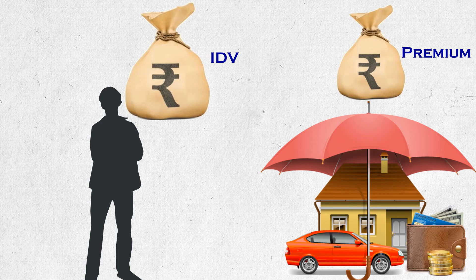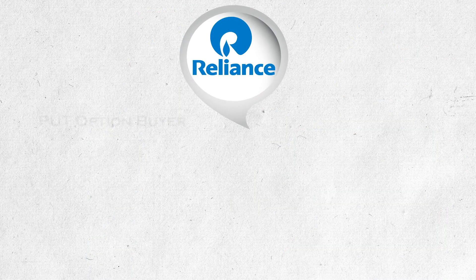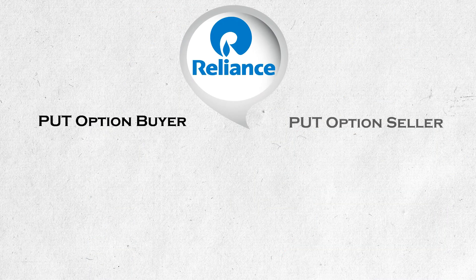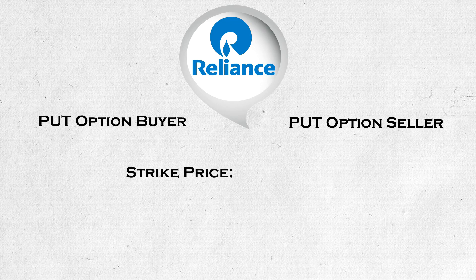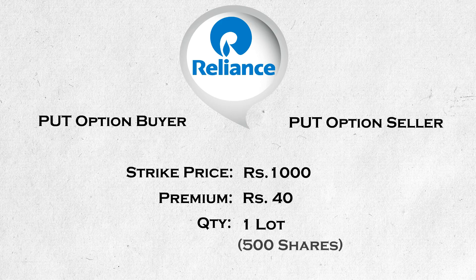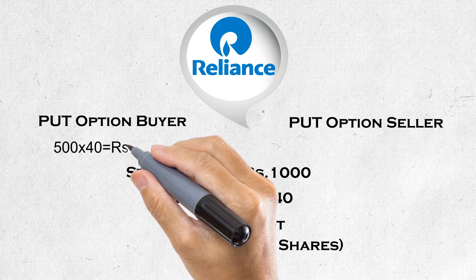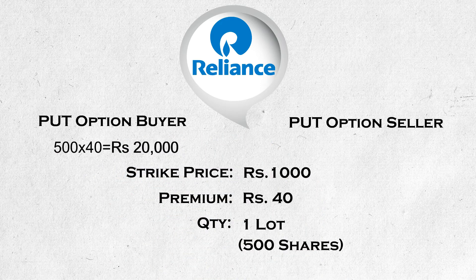Let us check put options in the actual market. Let's suppose that in Raylan's options market, you are a put option buyer. You have bought a put option of 1000 PE — that is, for a strike price of 1000 rupees — with a premium of 40 rupees, and you have purchased one lot which equals 500 shares. So as a put option buyer of this contract, you have given the option seller 20,000 rupees premium and locked a deal.